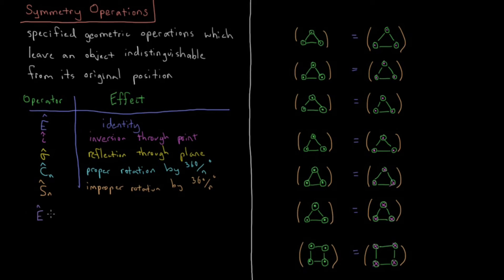For example, E is also equal to C1, so rotation by 360 degrees leaves you right back where you were. So C1 is an identity operation. You can also have the square of operations. So for example, if I take C4 rotation by 90 degrees and I square it, that's 90 plus 90, which is 180 degrees C2. So C4 squared equals C2.